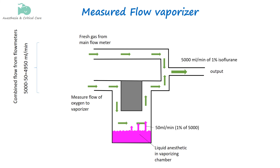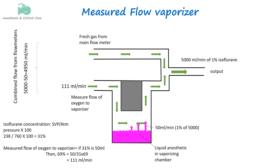The saturated vapor pressure of isoflurane at 20 degrees Celsius is 238 mmHg, which represents 31% of isoflurane. This 50 mL/min is 31% of isoflurane vapor. The remaining 69% of this, or 111 mL/min, is the measured flow of carrier gas or oxygen that must flow to the vaporizing chamber.